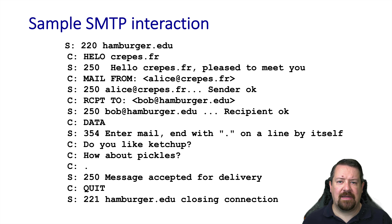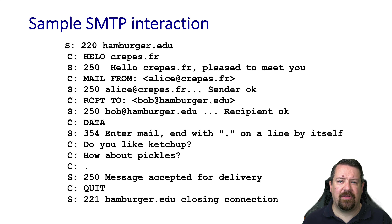The client then says it is going to send data, which will be a multi-line process. The server acknowledges the data directive and instructs that the client complete the data entry with a period on a line by itself. The client then transmits multiple lines for the body of the message, and these lines are not acknowledged individually by the server. After the line with nothing but a period, the server acknowledges receipt of the entire data field, and the client could then begin a new email message or close the connection.